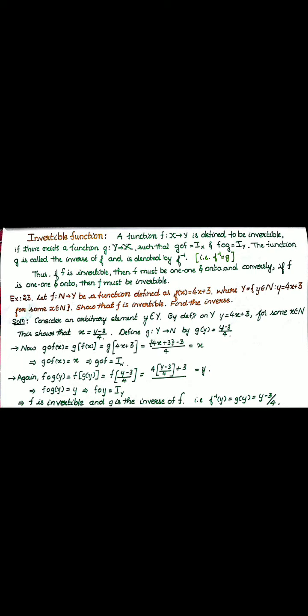It is denoted by f inverse, that is f inverse equals g. Thus if f is invertible, then f must be one-to-one and onto. Conversely, if f is one-to-one and onto, then only f must be invertible.